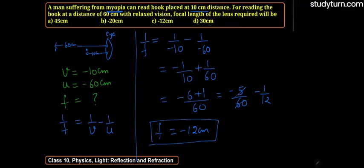This means 12 cm focal length on the left side. So, option C is the correct answer. I hope you understood this. Thanks for watching.